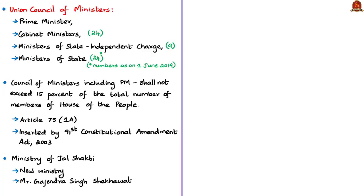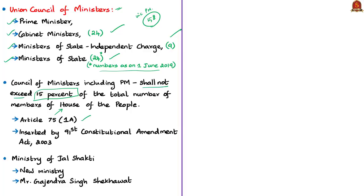The Union Council of Ministers includes the prime minister, cabinet ministers, ministers of state (independent charge), and ministers of state. At present there are 24 cabinet ministers, 9 ministers of state with independent charge, and 24 ministers of state — totaling 58 including the prime minister. Article 75, Clause 1A states that the total number of ministers, including the prime minister, shall not exceed 15% of the total number of members of the Lok Sabha. This clause was added by the 91st Constitutional Amendment Act of 2003, limiting the prime minister's power to appoint unlimited ministers.